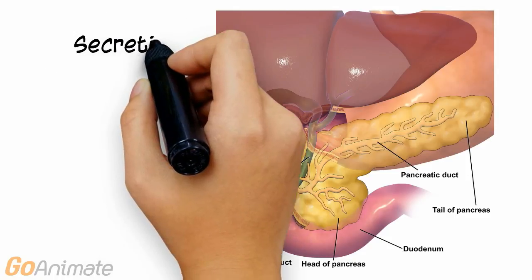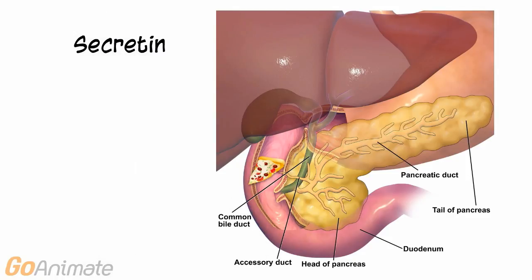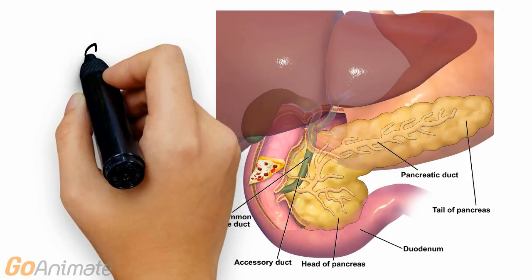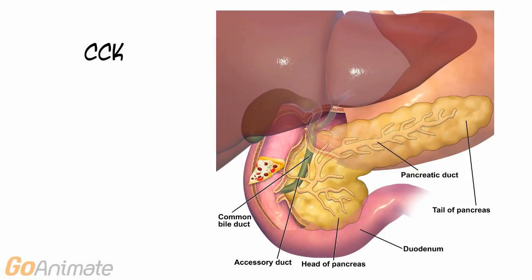Secretin also promotes pancreatic secretions, which include enzymes and bicarbonate ions. CCK, or cholecystokinin, secreted by the duodenum, also promotes the release of bile from the gallbladder.